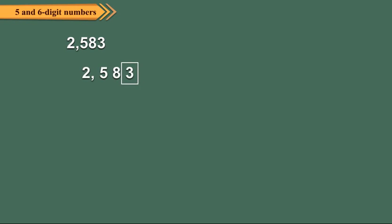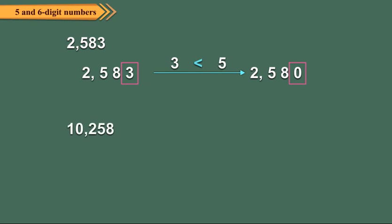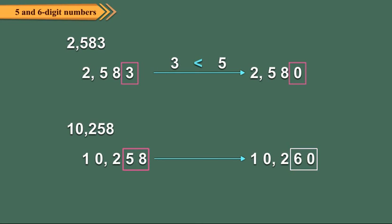Consider the number 2583. The ones digit is 3, so we replace the ones digit by 0, giving 2580. In 10258, the ones digit is 8, so we increase the tens digit 5 by 1 and replace the ones digit by 0, giving 10260.